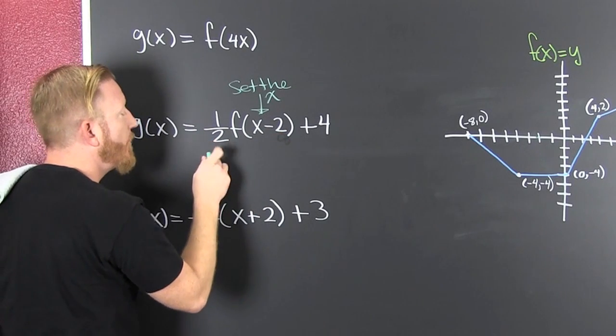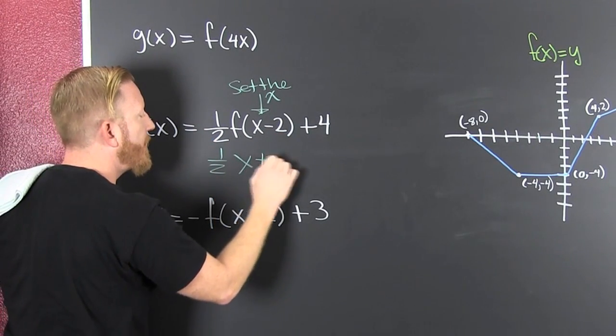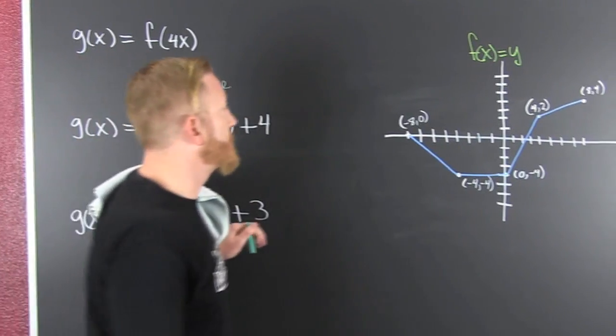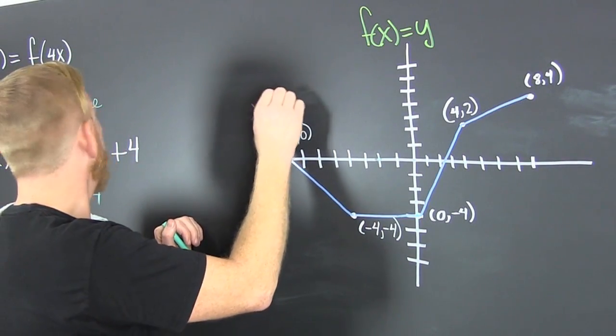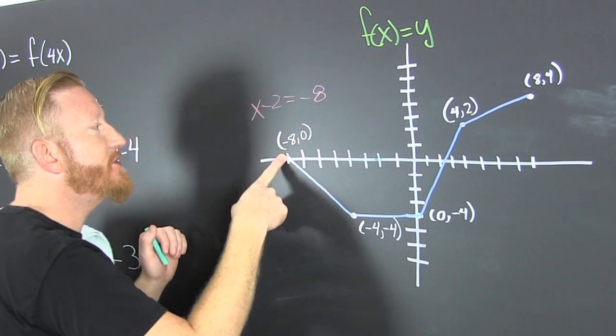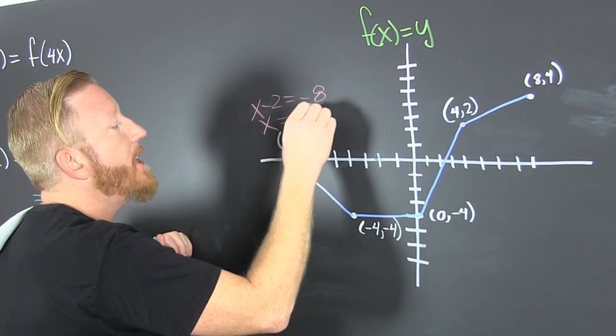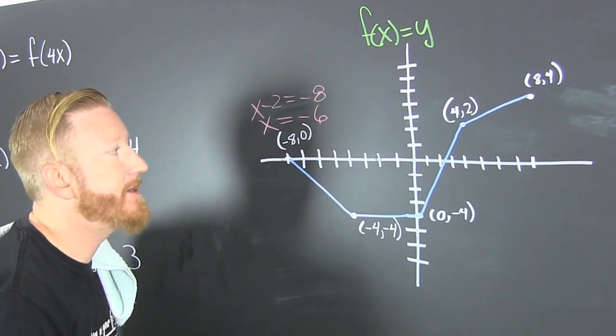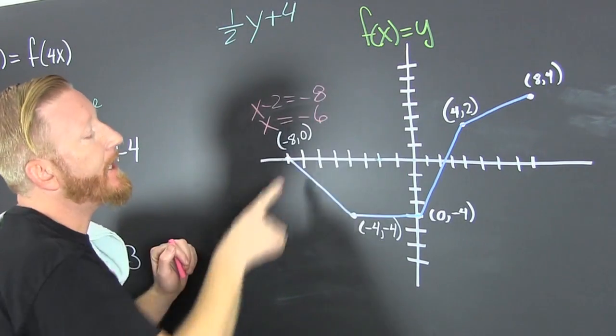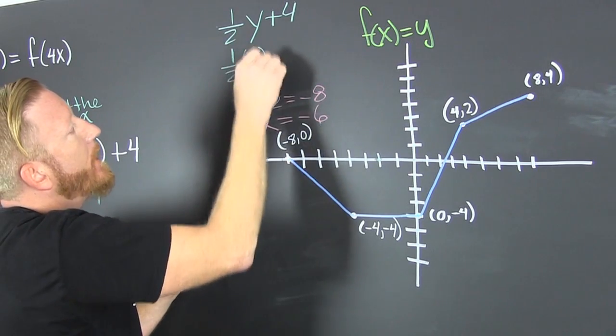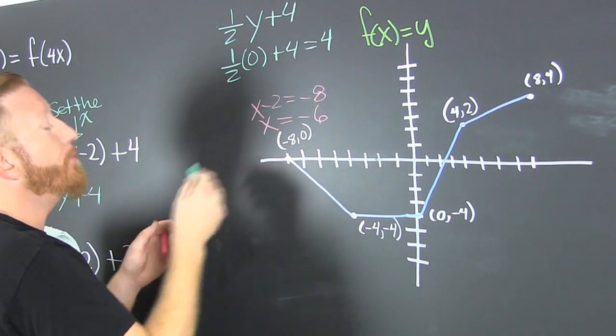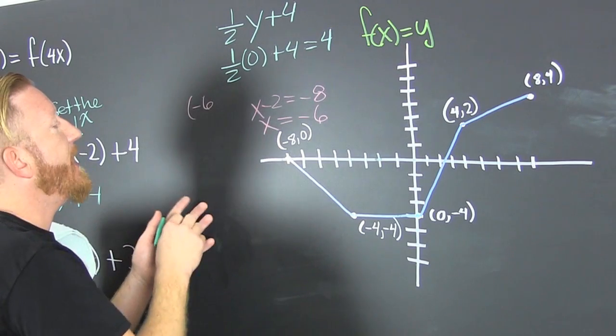So what are we going to do? We're going to take one half y plus 4. So we're going to take half of y and then add 4 to it. Let's find our new x. x minus 2 is equal to minus 8. We're translating this point so we can change this function into g. So then I see my x is going to be minus 6. But wait. There's more. Since I have 1 half y plus 4, I can do that there. That's 1 half 0 plus 4 which is equal to 4.